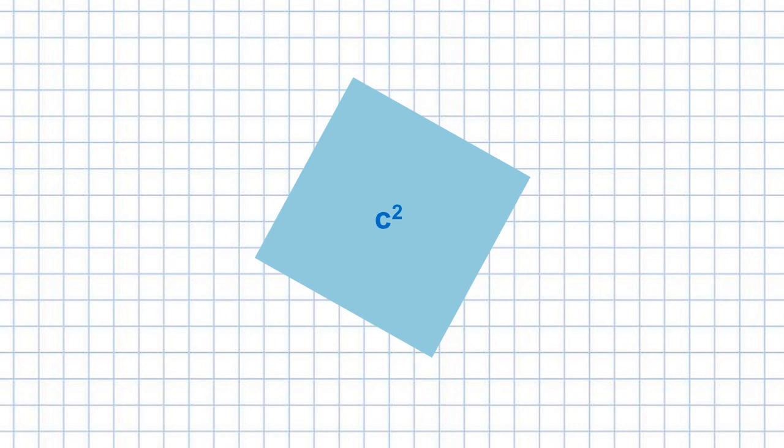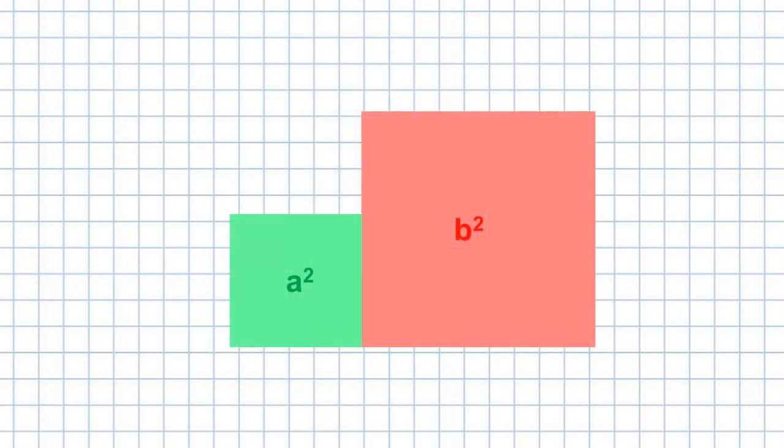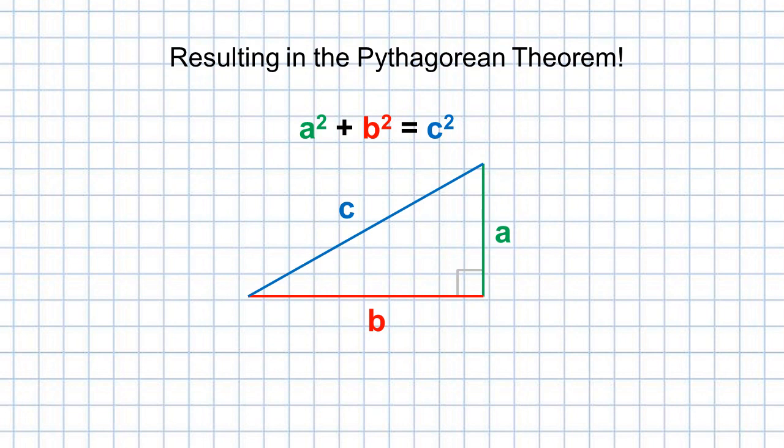Recalling that this new square was constructed from the parts of the original two squares, we've shown that A squared plus B squared equals C squared, which is the Pythagorean theorem.